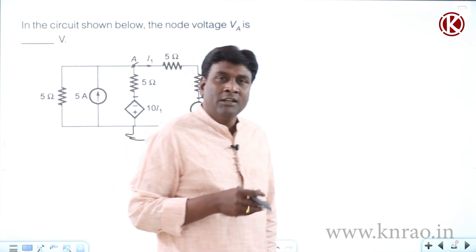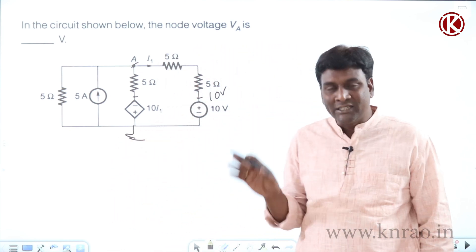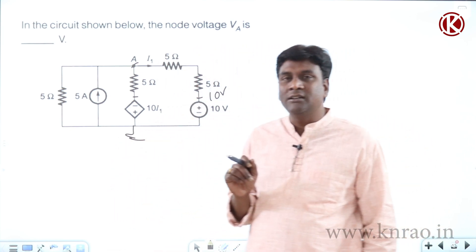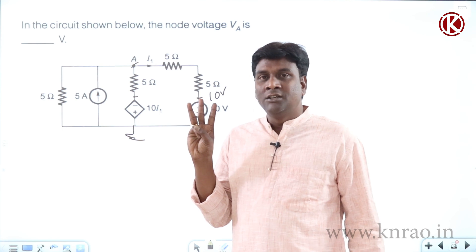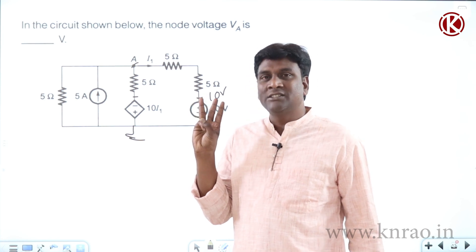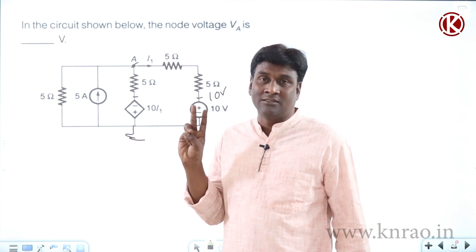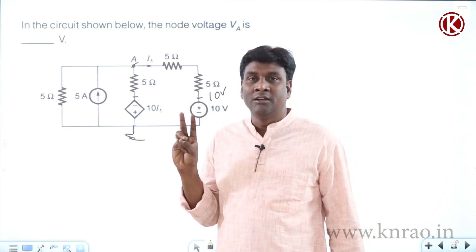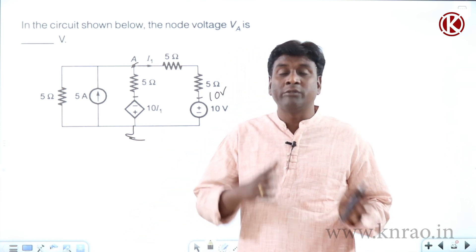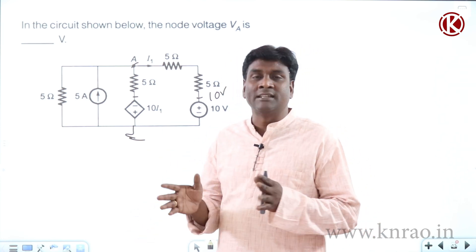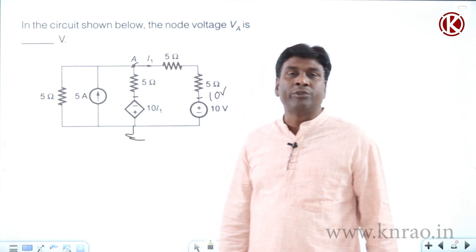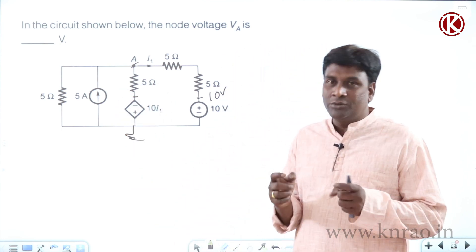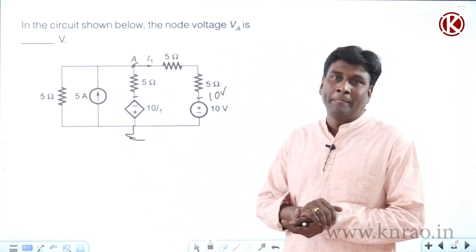We should not go with mesh analysis here because mesh requires three equations — two direct equations and one relation. That relation is not straightforward like i1 equals 5 or i2 equals 5, but rather i2 minus i1 equals 5, which is also a complicated thing.